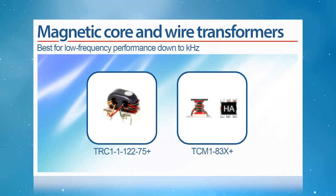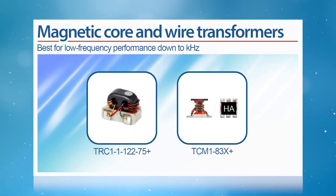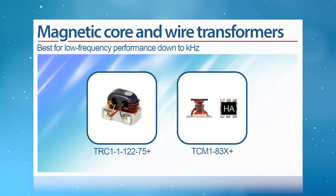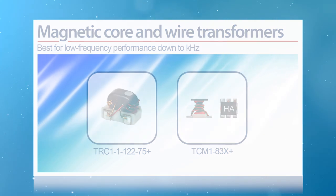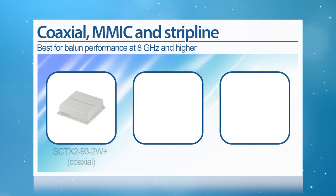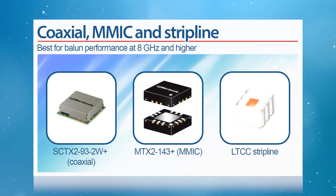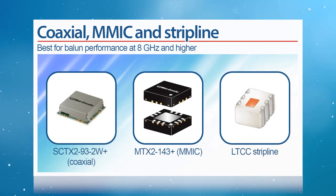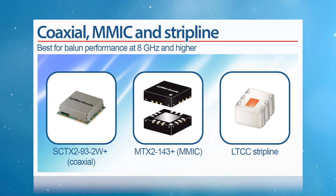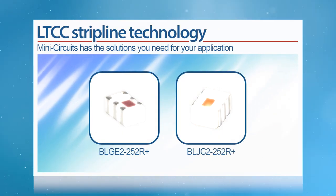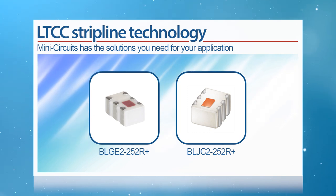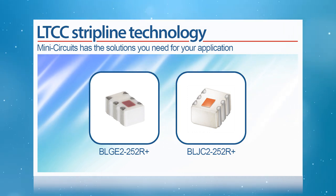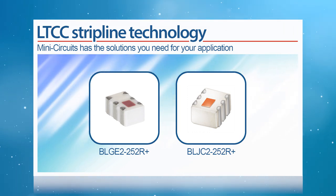So what material makes for the best balun? Well, magnetic core and wire transformers are best for low frequency performance down to kilohertz, but are limited to less than 8 gigahertz. For balun performance up to 8 gigahertz and higher, coaxial, stripline, and MMIC designs are required. Designs using LTCC stripline technology are also recommended for high reliability applications, as they are more suited to extreme environmental conditions than core and wire designs.